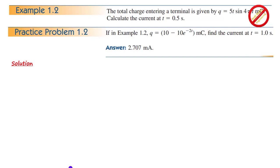In example 1.2, if q is equal to 10 minus 10 e raised to power minus 2t micro coulomb, find the current at t equal to 1 second.